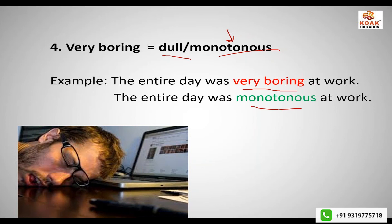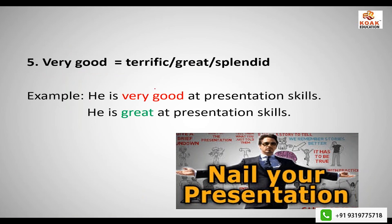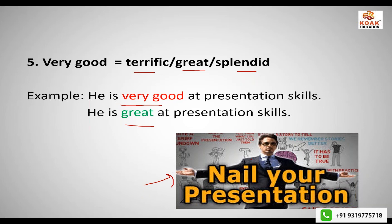The next one is 'very good,' a really common phrase. Instead of 'very good,' use 'terrific,' 'great,' or 'splendid.' For example, instead of 'he's very good at presentation skills,' say 'he's great at presentation skills' or 'he's terrific' or 'he's splendid at presentation skills.' You can see this man who nails all his presentations — he's a great or splendid presenter.